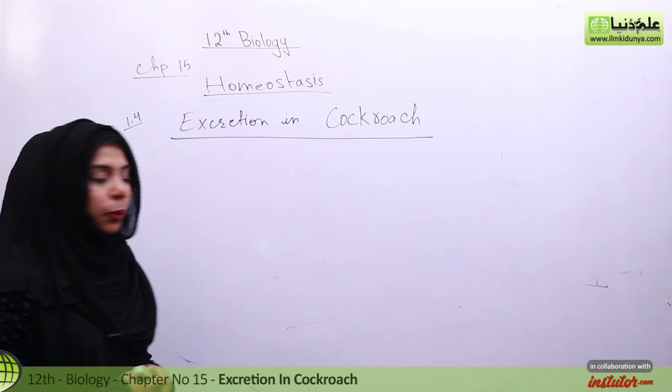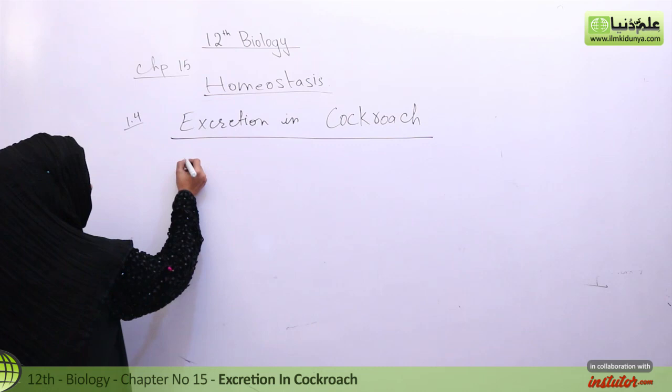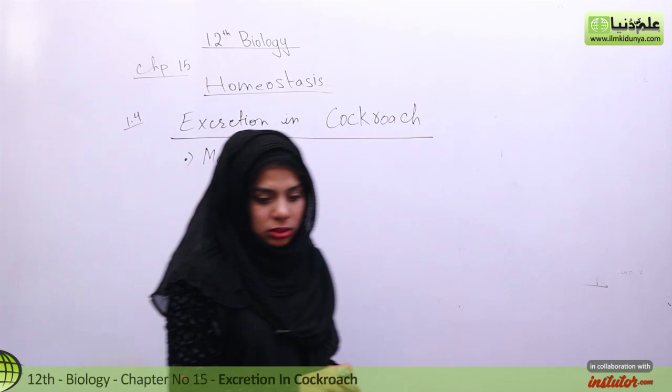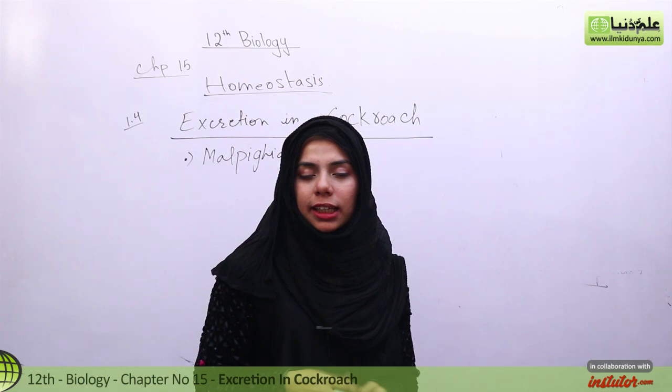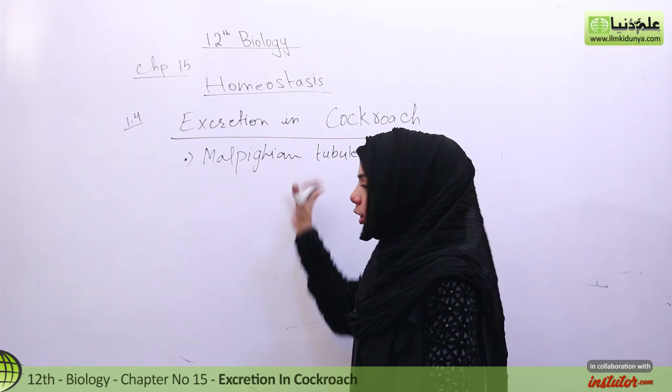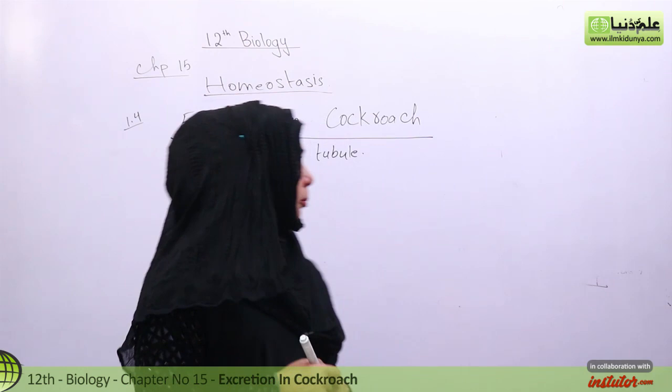Assalamu alaikum students. Our next topic is excretion in cockroach. The excretory organs in cockroach are the Malpighian tubules. These tubules are present in the cockroach, and excretion occurs from the hemolymph, which is the fluid present in the cockroach's body.